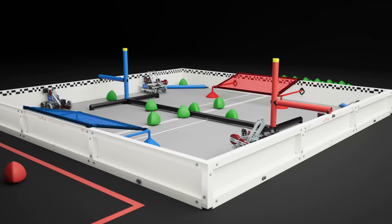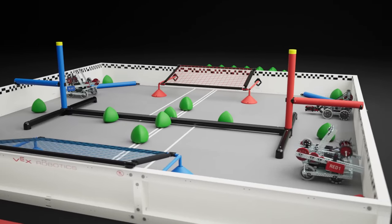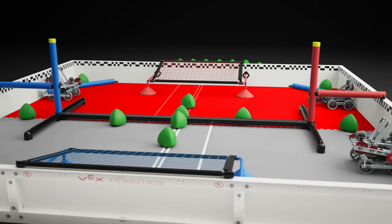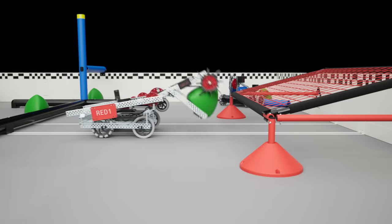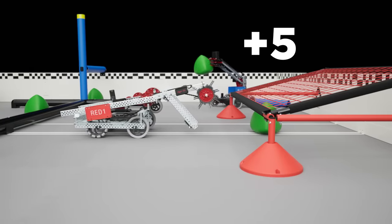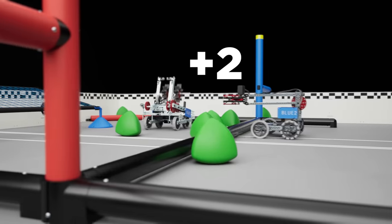There are two netted goals on opposite sides of the field. A three-inch PVC barrier divides the field into a red offensive zone and a blue offensive zone. Each tri-ball scored in a goal is worth five points, and each tri-ball which makes it into an offensive zone is worth two points.